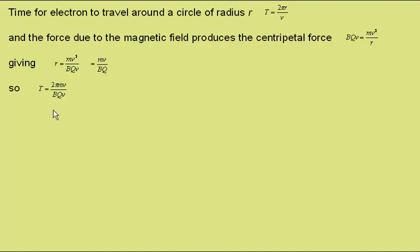So we get that the time period is equal to 2πmv over Bqv. The v's top and bottom can cancel, giving us the time period for a cyclotron as 2πm over Bq, m being the mass of the particle, B the magnetic flux density within the d's, and q the charge on the particle.